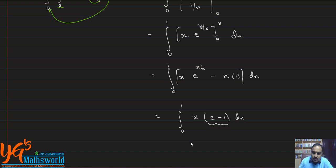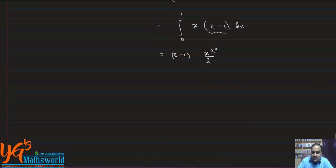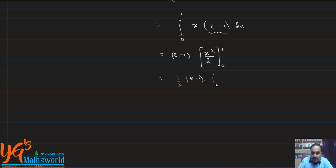Since (e minus 1) is a constant, we take it common. The integration of x is x squared over 2, within limits 0 to 1. So the result is (1/2)(e minus 1), with upper limit 1 minus lower limit 0. The final answer is (e − 1)/2. Hope it is clear.